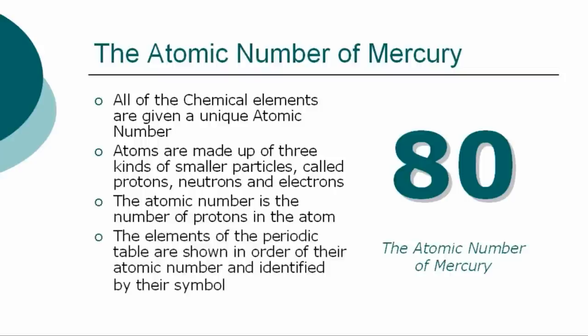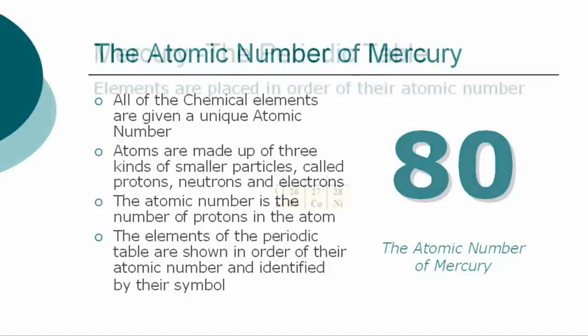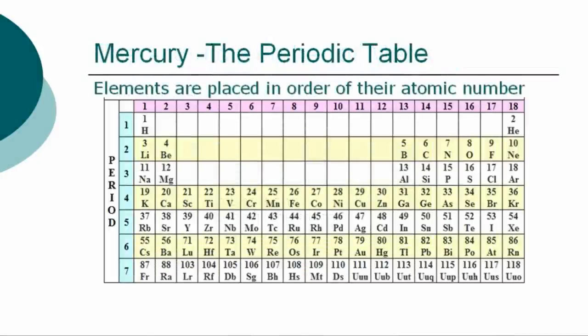The chemical elements of the periodic table are shown in order of atomic number and identified by their symbol. The periodic table is a chart showing the symbols and the atomic numbers of all known elements, such as mercury, in one large grid. The chemical elements are placed in order of their atomic numbers, which increase as you move across a row, called a group, or down a column, called a period.